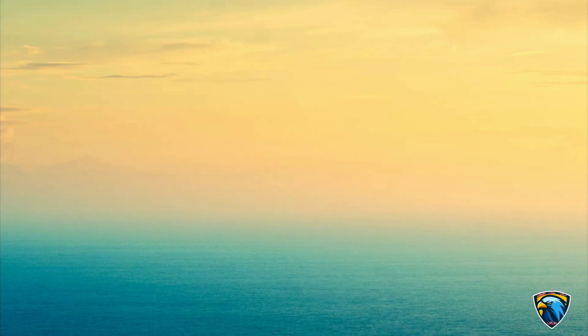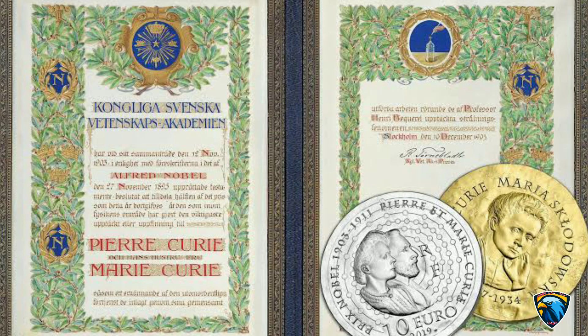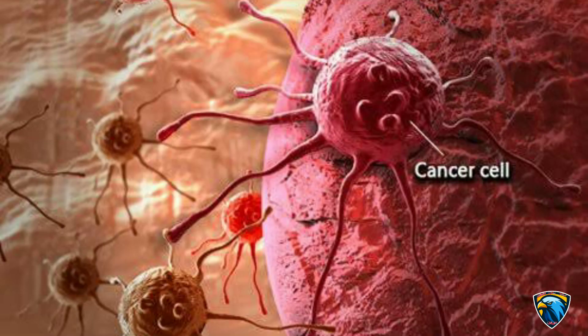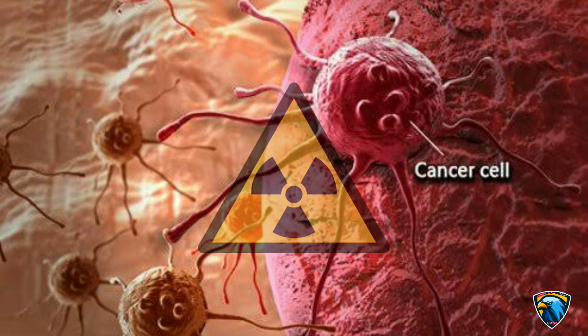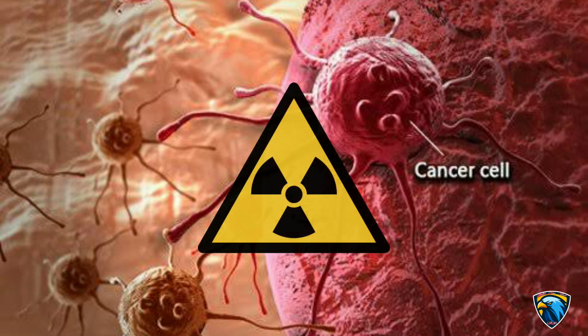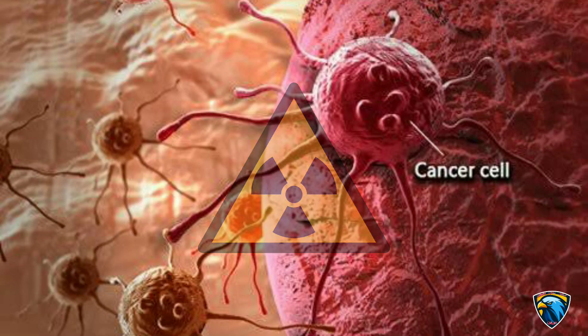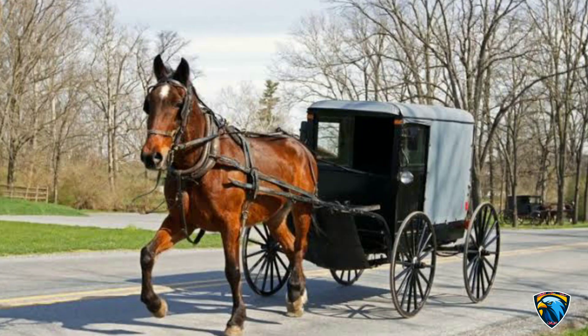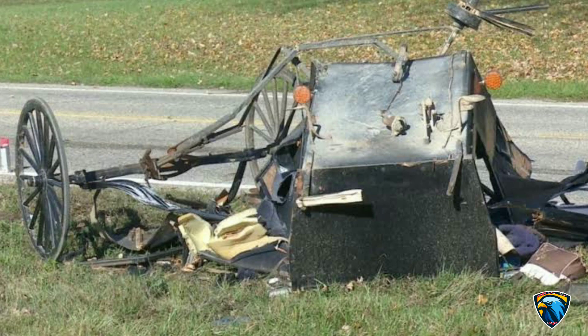Marie Curie went on to win two Nobel Prizes: 1903 in Physics and 1911 in Chemistry. She died of cancer caused by radiation exposure in 1934 at the age of 66. Her husband died in 1906 after getting hit by a horse and buggy.